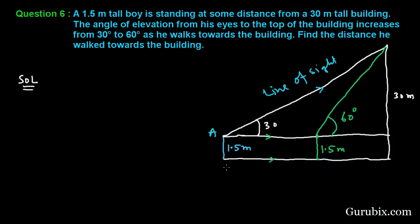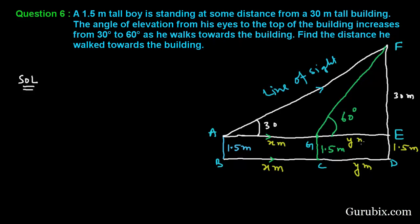Suppose this is point A, this is B, this point is C, this is D, this is E, this is F, and this point is G. We have to find the distance BC or AG. We let this distance equal X meters. Since ABCG is a rectangle, opposite sides are equal, so BC is also X meters. Since GCDE is also a rectangle, GC is 1.5 meters so DE is also 1.5 meters. Suppose CD is Y meters, so GE is also Y meters.